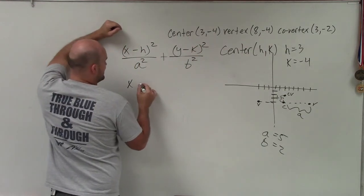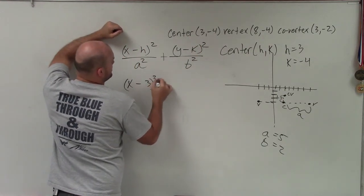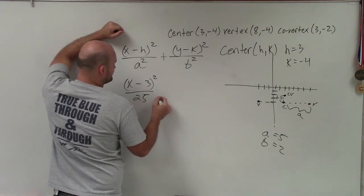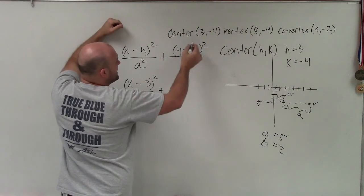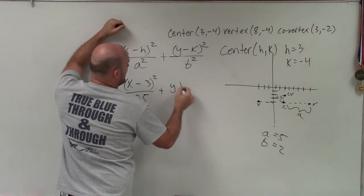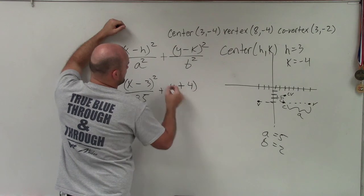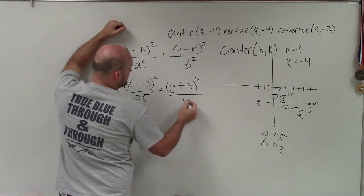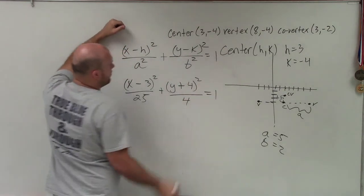So my equation is going to look like this: (x - 3)² over a², which is 5², which is 25, plus y opposite of negative 4, which would be (y + 4)², all over b², which would be 2², which is 4. And we always set that equal to 1.